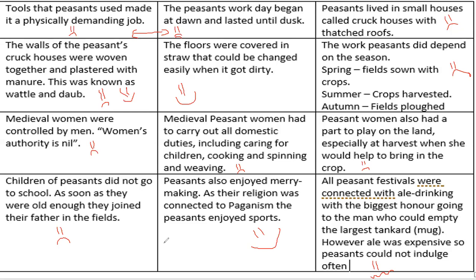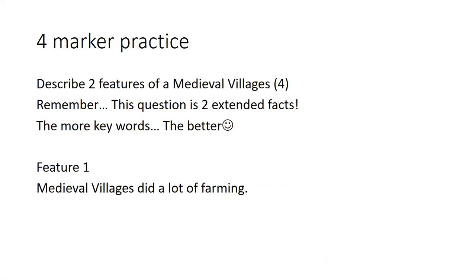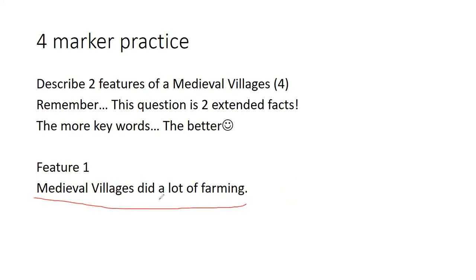At GCSE, in the Richard and John paper, the first question you will get is a four-mark 'describe two features' question. This question requires you to spend about four or five minutes on, and what the examiner is looking for is basically two big facts. For example, 'medieval villages did a lot of farming' would probably get one mark — you've identified a fact. To get the second mark you need to take it further: talk about ploughing, sowing, harvesting, the three different types of peasants, and some of the jobs they did in the farming process.